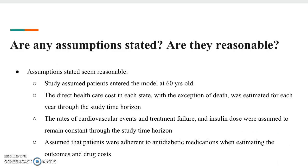We also looked at whether assumptions were stated and whether they were reasonable. The assumptions were considered reasonable and included: patients entering the model were 60 years old; direct healthcare cost in each state, with the exception of death, was estimated annually through the study time horizon; rates of cardiovascular events, treatment failure, and insulin doses were assumed to remain constant throughout the study; and patients were assumed to be adherent to anti-diabetic medications when estimating outcomes and drug costs.